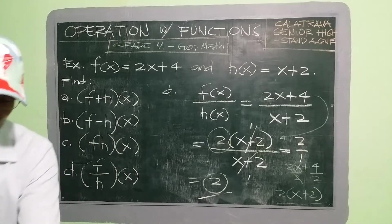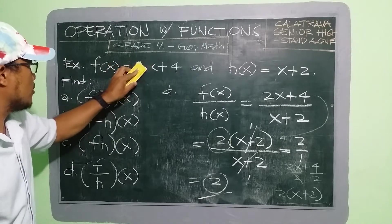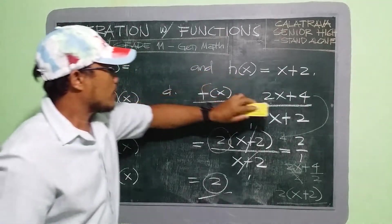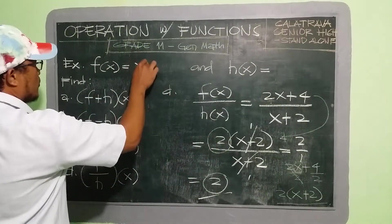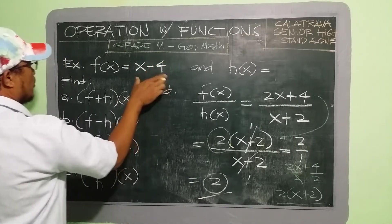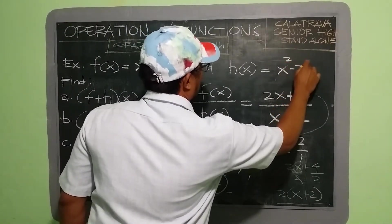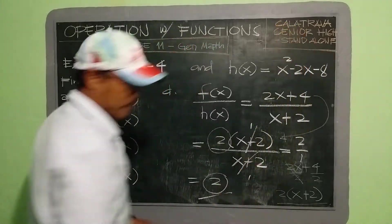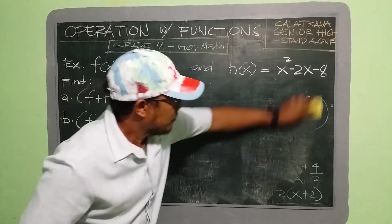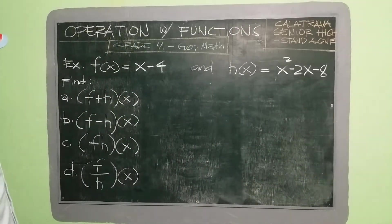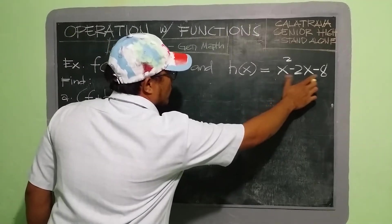Now we have another example. This time I will change the given functions. What if f(x) = x − 4 and h(x) = x² − 2x − 8? Let's find the sum, difference, product, and quotient of these new functions.